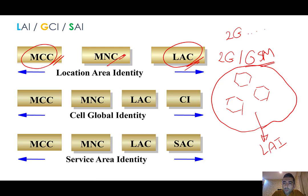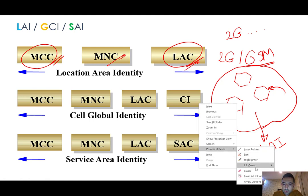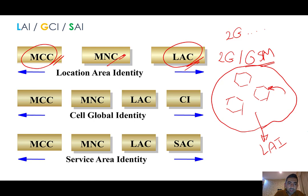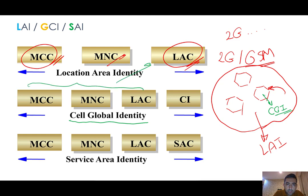which is unique for each of these location areas. For each specific cell we have another terminology — CGI, or Cell Global Identity. As you can see, CGI consists of MCC, MNC, and LAC — the same as before — plus a Cell Identity. For 3G we have another terminology: